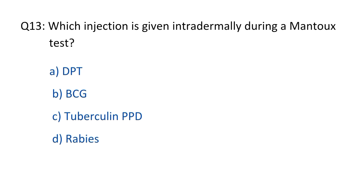Question No. 13. Which injection is given intradermally during a Mantoux test? The right option is option C, tuberculin PPD.